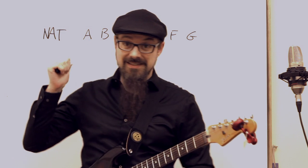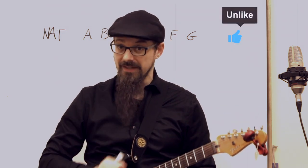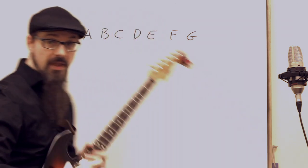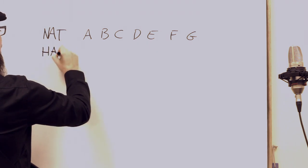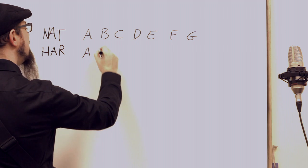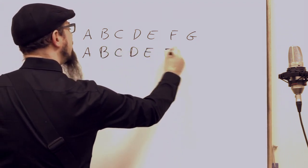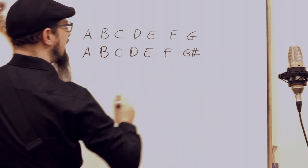Everybody agrees that this is a natural minor scale. And what everybody agrees to is that there is a harmonic minor scale, and the harmonic minor scale works this way. The notes are A, B, C, D, E, F, G sharp.